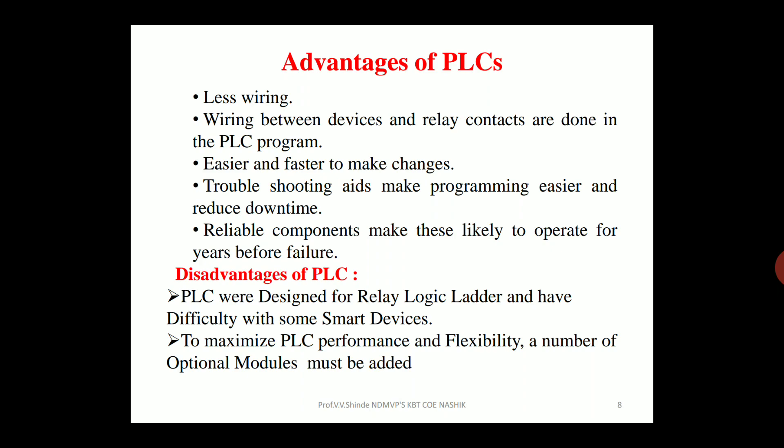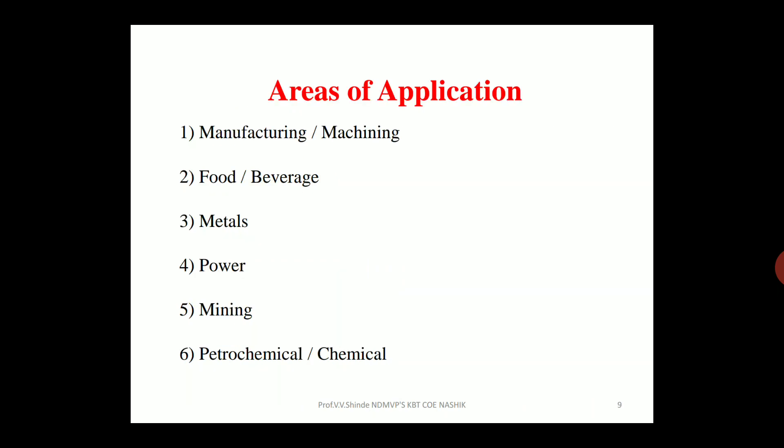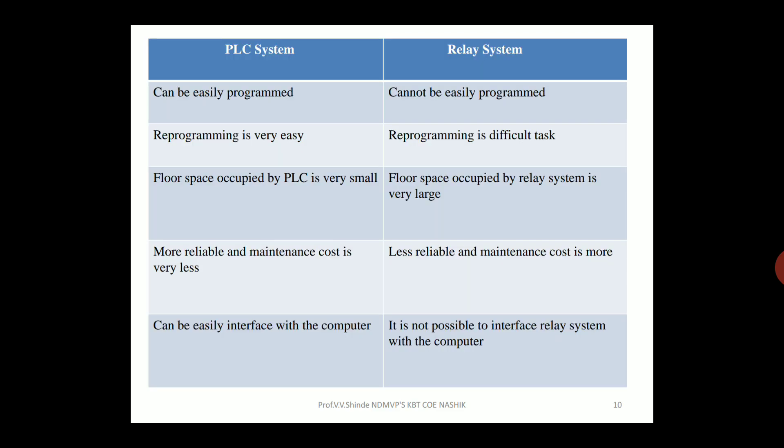Regarding areas of application — wherever you find automation, you will find PLCs. That includes the manufacturing sector, machining, food and beverage sector, metals, power industries, mining industries, petrochemical industries, and chemical industries. PLCs are found everywhere automation is present.